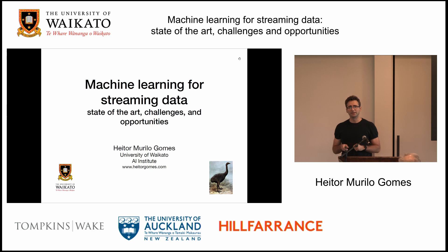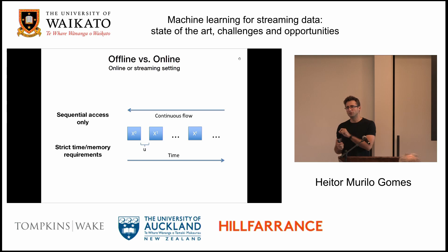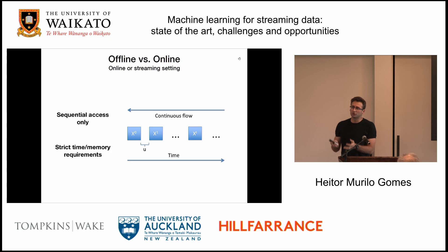When we are talking about static machine learning or machine learning for batch data, we have a static dataset that you can have multiple passes over it — sometimes you do more multiple passes than you should — and you have random access to any instance that you want. When we are talking about machine learning for data streams, then we have this continuous flow of data that we have to keep updating our models, we don't have access to very old data, sometimes we don't even want access to this old data because it's not useful anymore, and we do have strict time and memory constraints because we don't have infinite memory and infinite time to process them.